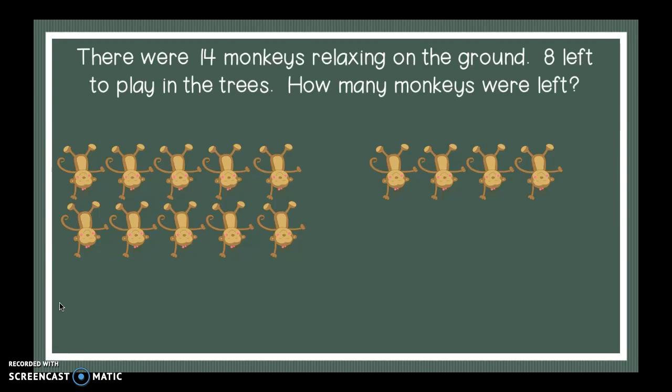It says eight left to play in the trees. I could just cross out eight from anywhere, of course. But I like to be organized when I subtract. So the first thing I'm going to do is I'm going to make a 10. I'm going to go ahead and circle a 10 group, just like I'm thinking about my 10 frame.